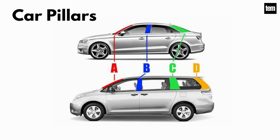Car pillars. The pillars on a car with a permanent roof body style are the vertical or nearly vertical supports of its windows, designated respectively as the A, B, C, and D pillar, moving from front to rear in profile view. Car pillars or columns are sometimes called posts.